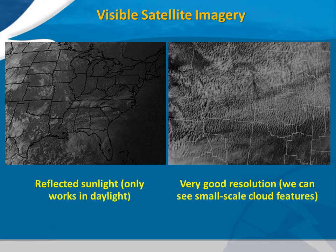The picture on the left shows an example of what happens when the sun sets. Over the northeastern United States and the Atlantic Ocean, the sun has set, so that part of the image is dark.